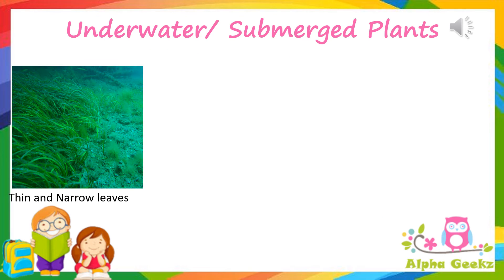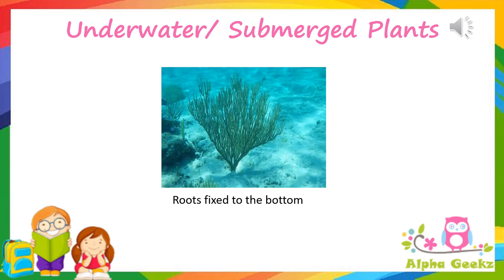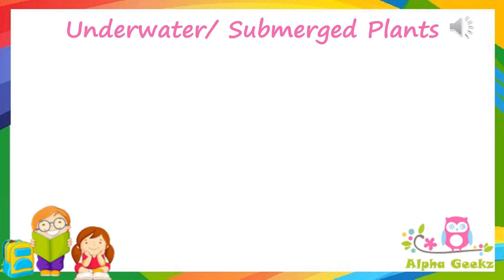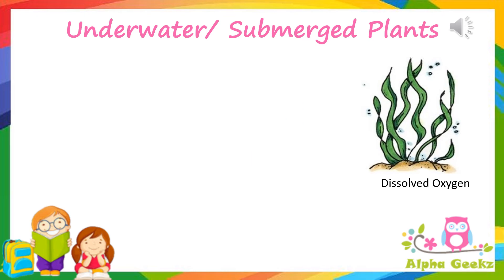These plants have thin and narrow leaves with flexible stems to withstand water currents. Their roots are fixed to the bottom of the pond or water body. The leaves of underwater plants have no stomata at all; instead, they breathe the dissolved oxygen through their body surface.